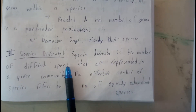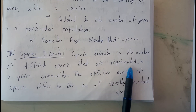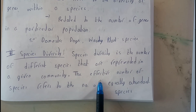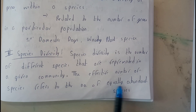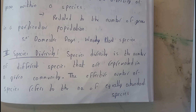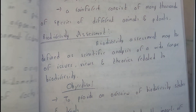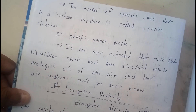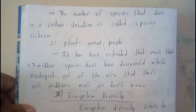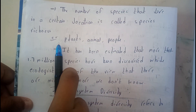Species diversity is the number of different species that are present in a given community. The effective number of species refers to the number of equally abundant species. The number of species that live in a certain location is called species richness.